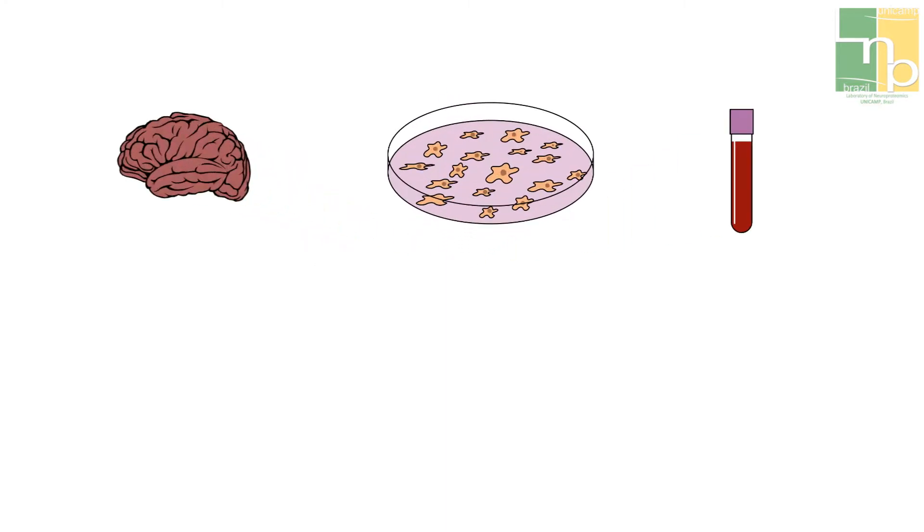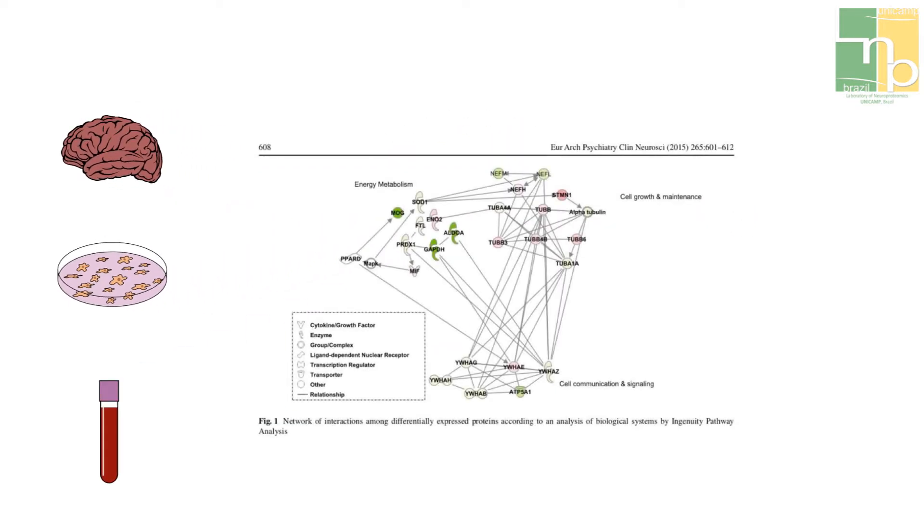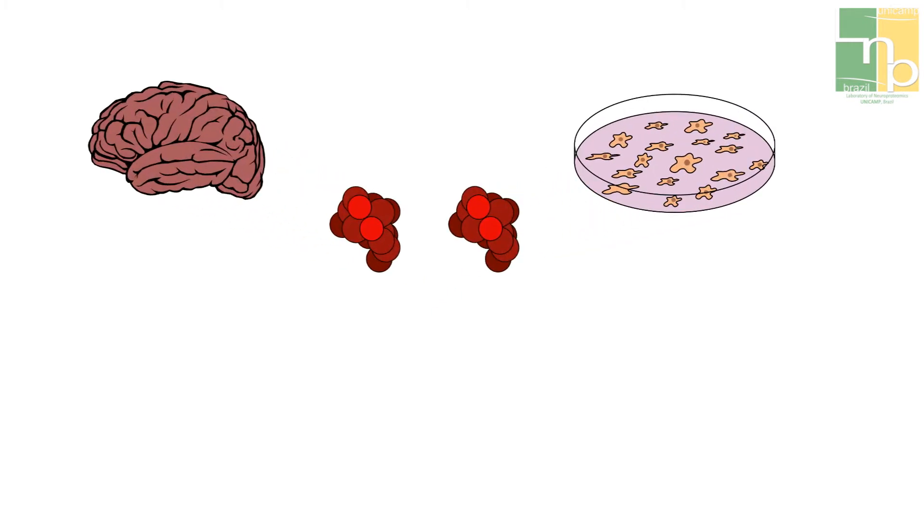From those biological materials, we map the proteome, which is the set of proteins that are present in these samples. The proteins produced in the brain and in the cell cultures can help us determine how the disease begins and progresses.